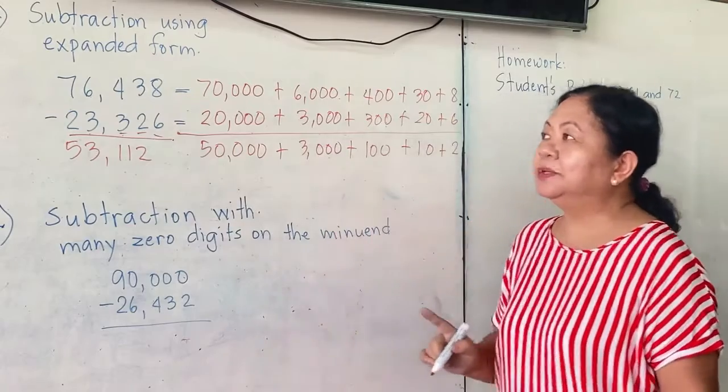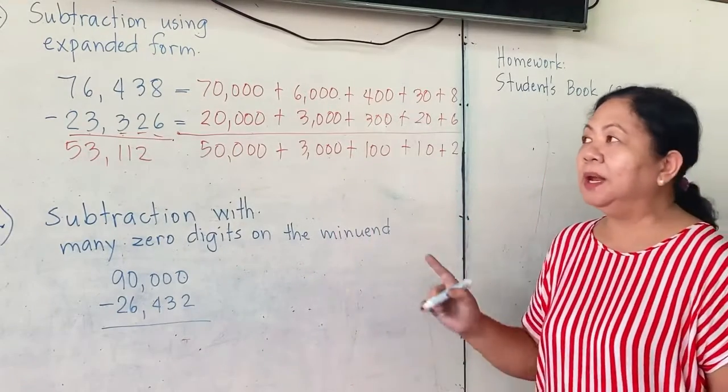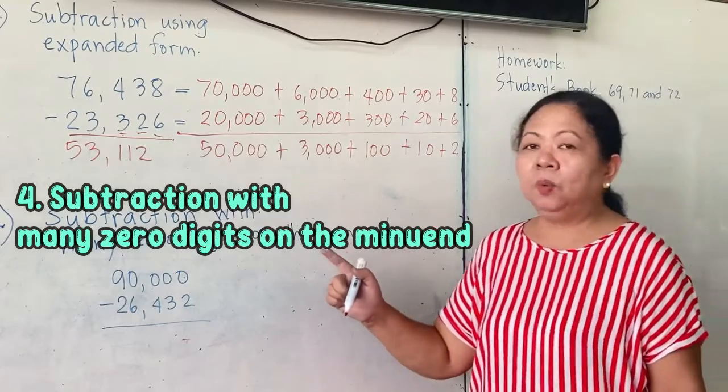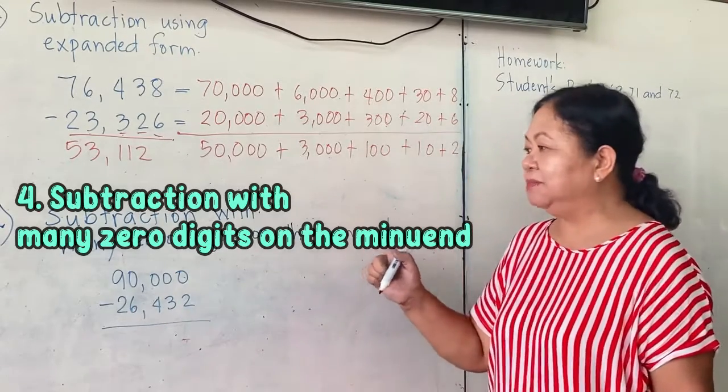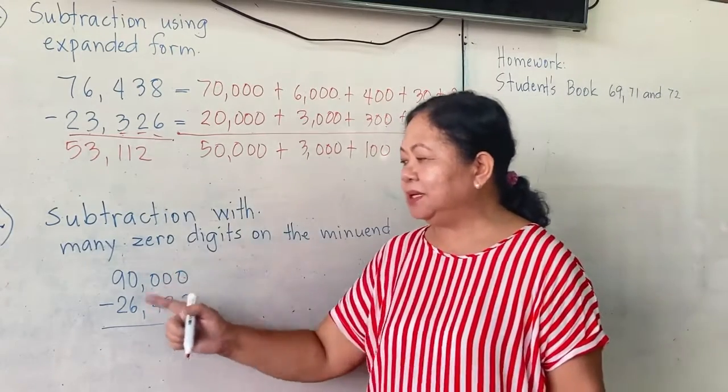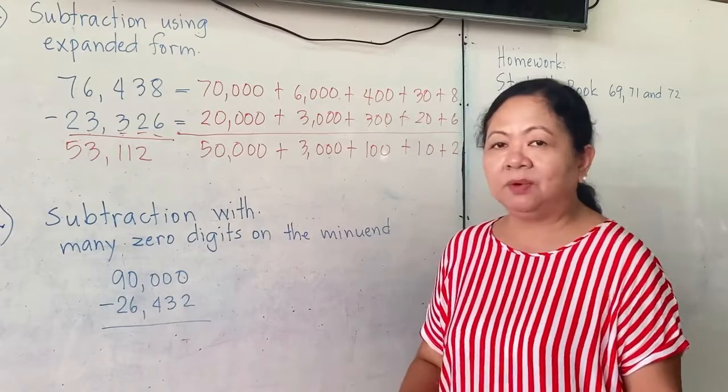That is how to use the expanded form when subtracting numbers. Now, number 4 example is subtraction with many zeros. Many zero digits on the minuend. Say we have 90,000 minus 26,432.